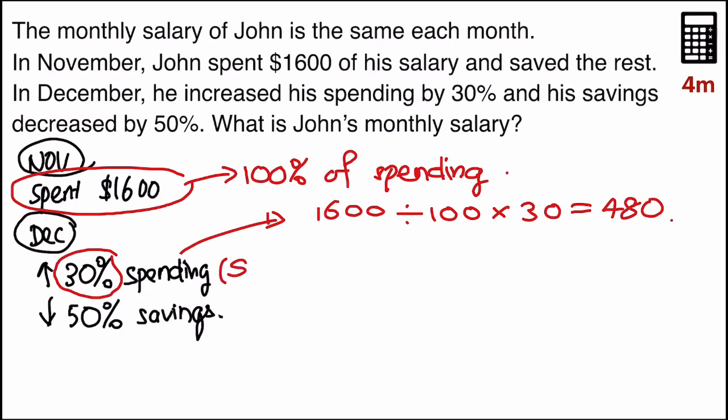So I know in that particular month, he spent $480 more than the previous month. And where will that money come from? Since every month his salary is the same, that $480 would definitely be coming from his savings. Which means 50% of his savings is equal to $480 as well. Can you see that?